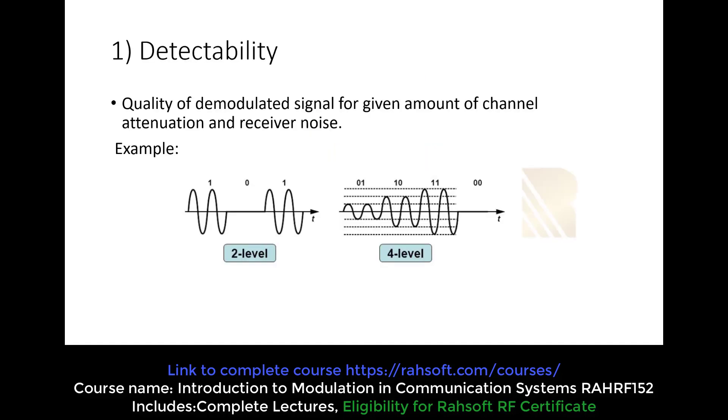First thing is detectability. What is detectability? We say the quality of the modulated signal for a given amount of channel attenuation and receiver noise. It can be a little bit complicated or vague, so I'm going to explain with this simple example.